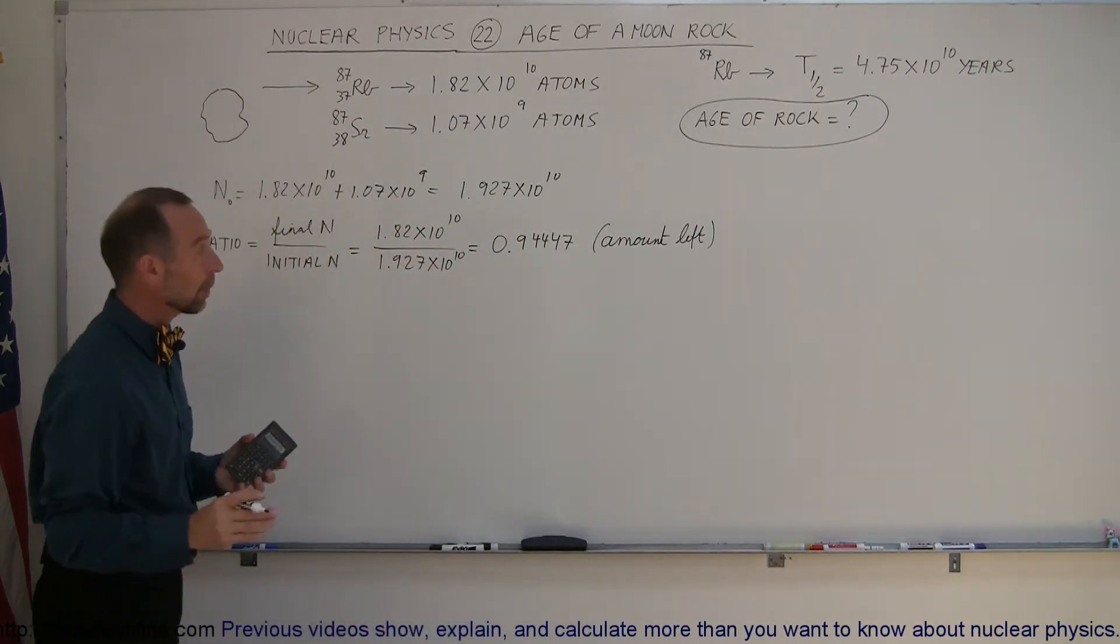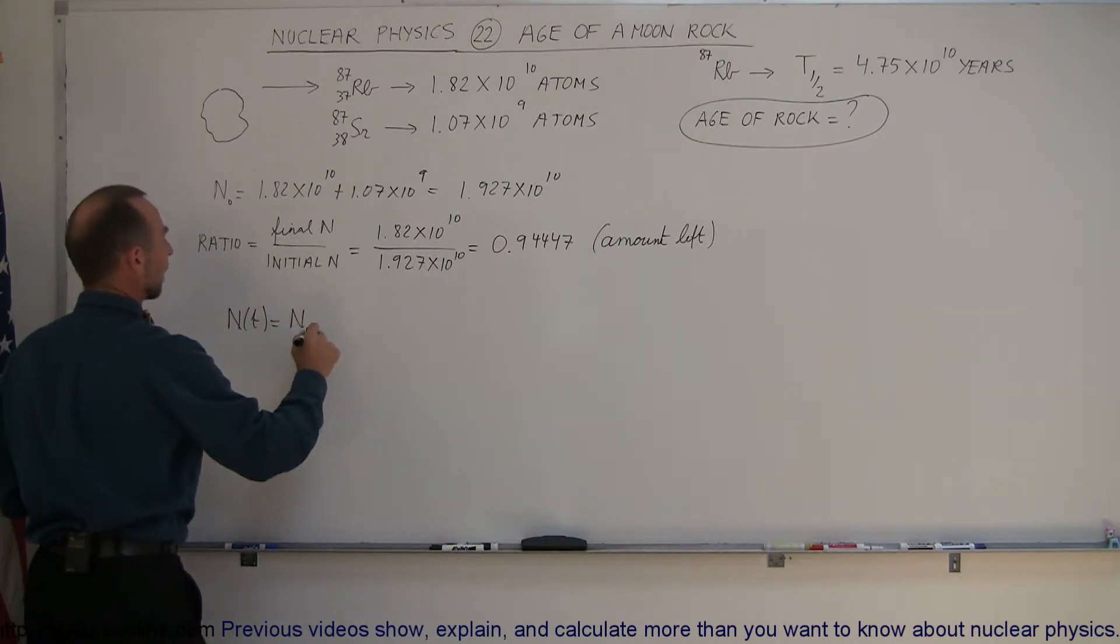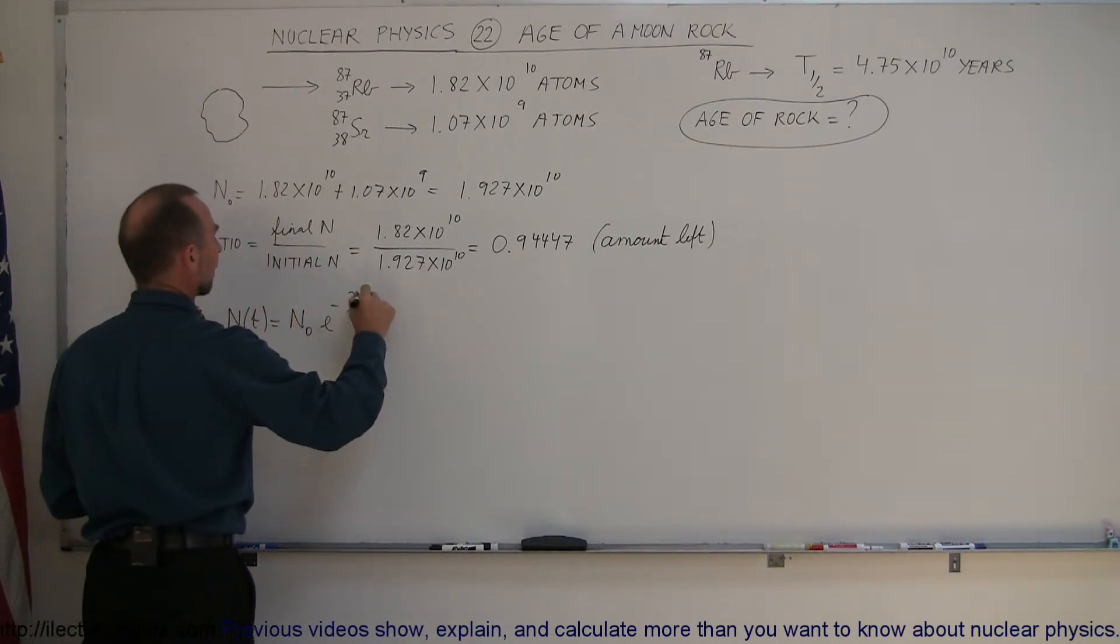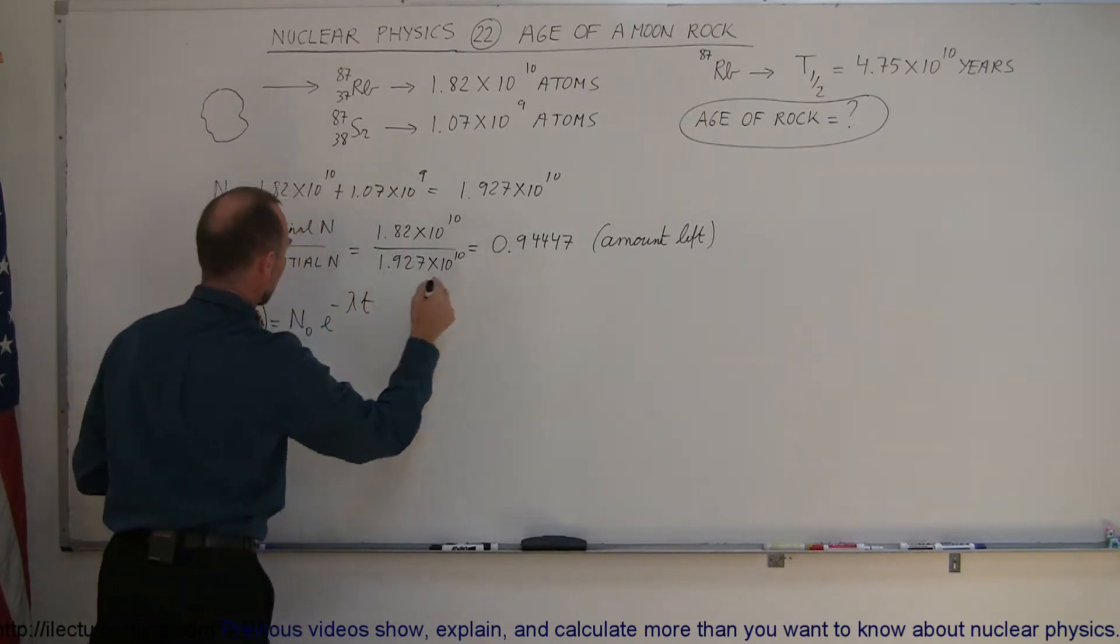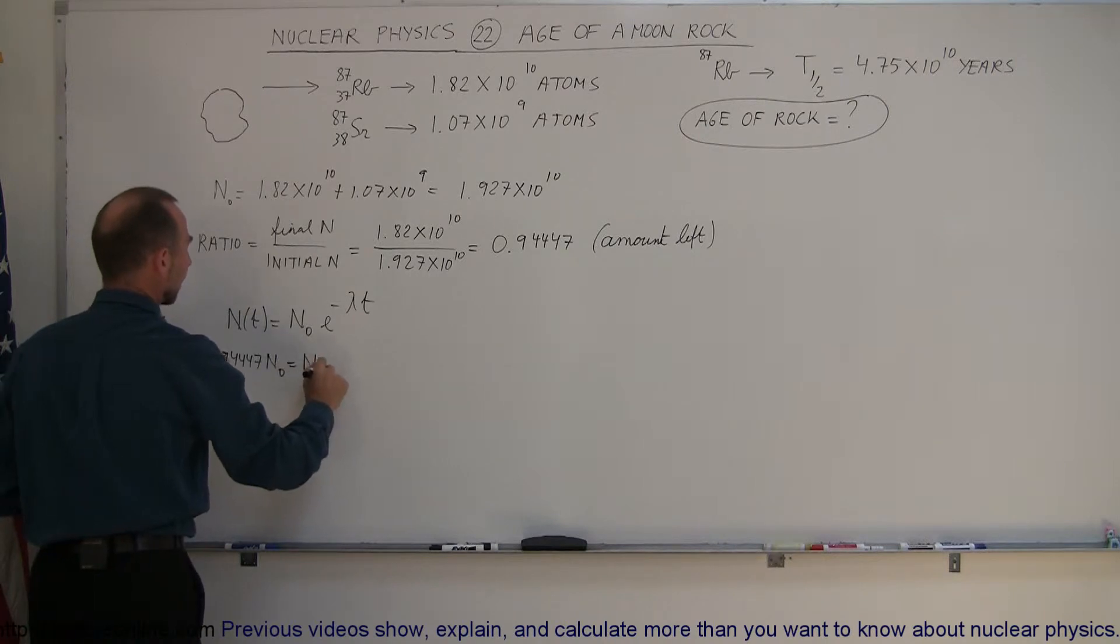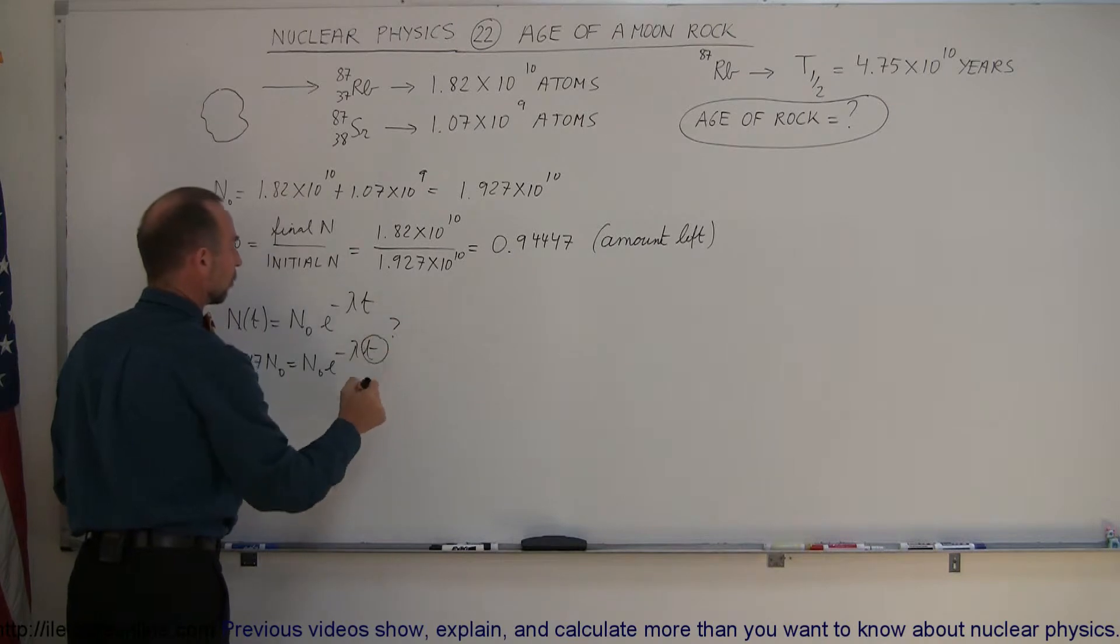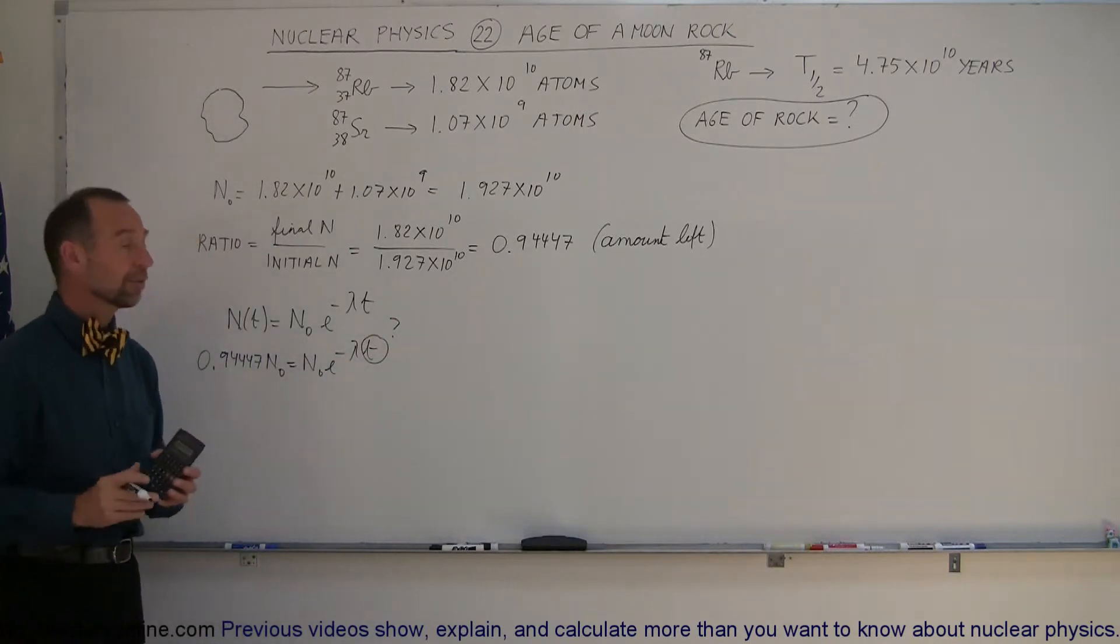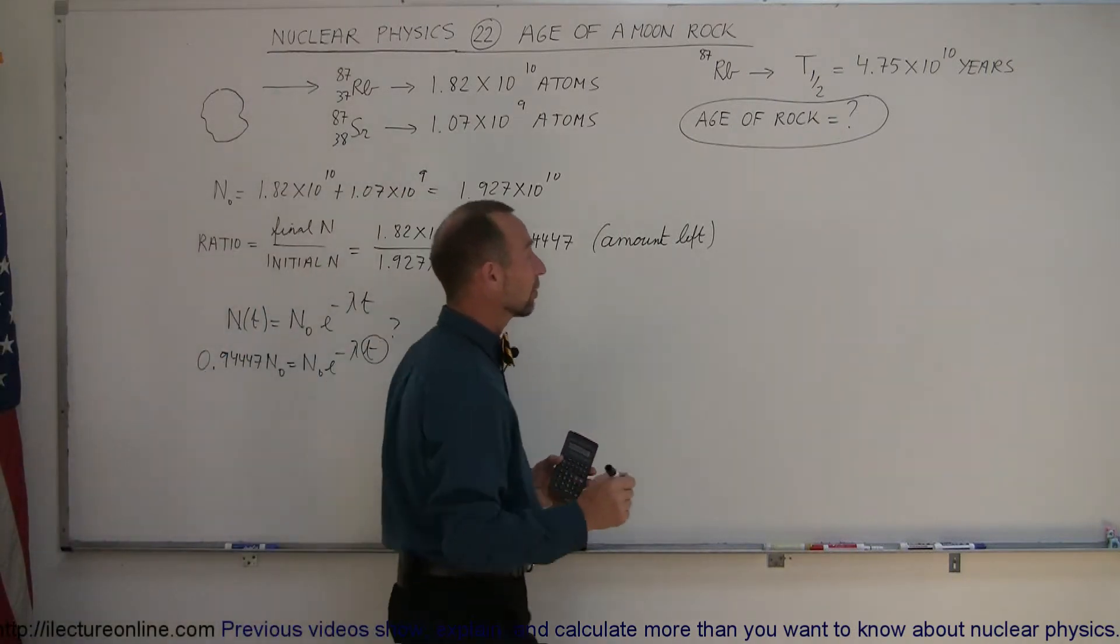Okay, so now we can plug that into our equation that we're familiar with. That N as a function of time is equal to N sub nought times E to the minus lambda times T. And of course, the amount that we have left as relative to the initial amount would be 0.94447 of the original amount equals the original amount times E to the minus lambda T. And of course, we're trying to find out what T is equal to. But before we can do that, we also need to figure out what lambda is, the decay constant. So we still have to find a decay constant.